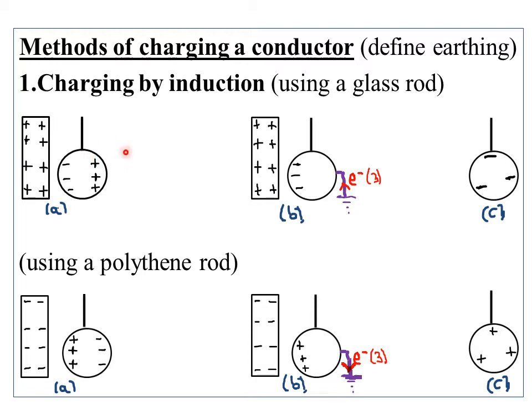The procedure involved in charging by induction is: first, suspend the polystyrene ball coated with aluminum using the silk thread — to suspend means to tie the ball such that it is hanging in air. Then bring a charged glass rod close to, but not touching, the suspended ball.